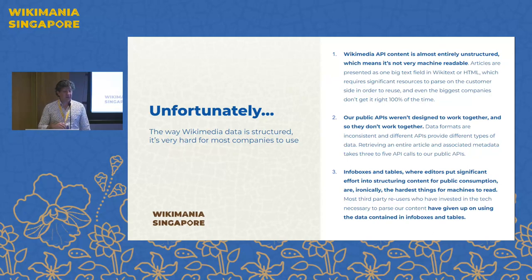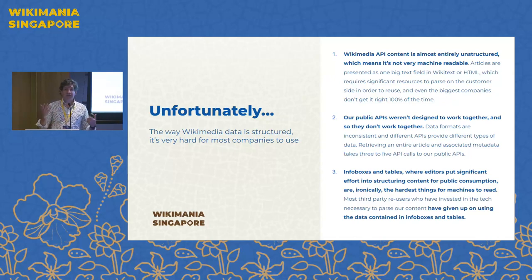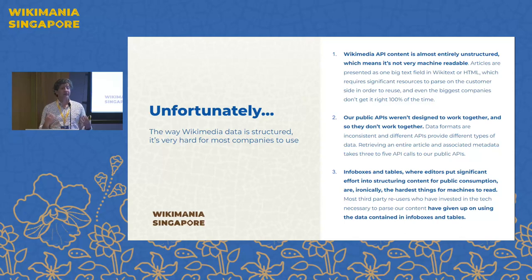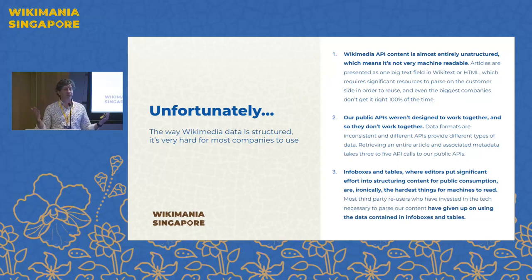What this means in practice is that these large companies — that's when I say they have 12-to-15-person teams, this is what they're doing. They are building those parsers and maintaining them, because there's no commercial guarantee that we won't change things on our end. Things like new templates can be added. Our public APIs were also not designed to work together for the most part. Third-party reuse of Wikimedia content has not historically been a significant focus for the technology teams. When APIs were created, they were created usually internally to serve a particular purpose — they weren't envisioned as a set of APIs that should function together. They don't share a schema, so you have to figure out what an article is in one and what it is in another. That takes time and engineering resources.